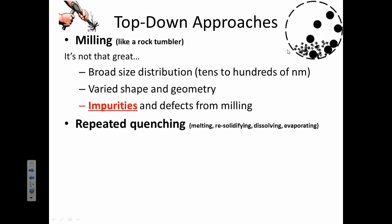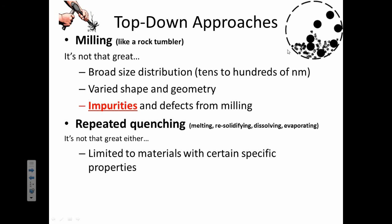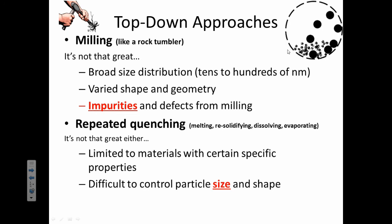There's also another technique. It's called repeated quenching. You basically melt something down, re-solidify it. You can dissolve it, evaporate away part of the liquid, and you repeat that process over and over again. It's also not that great because you're limited to materials that have certain properties, like they can melt or they can dissolve, but that is another technique you may hear about. It's also difficult to control the size and shape, just like with milling.